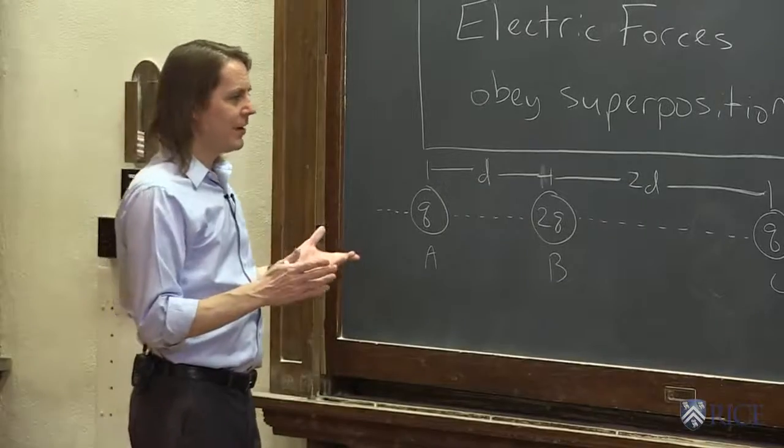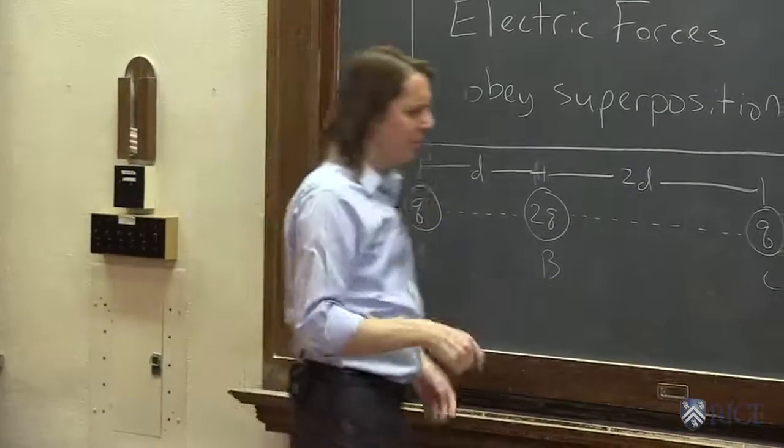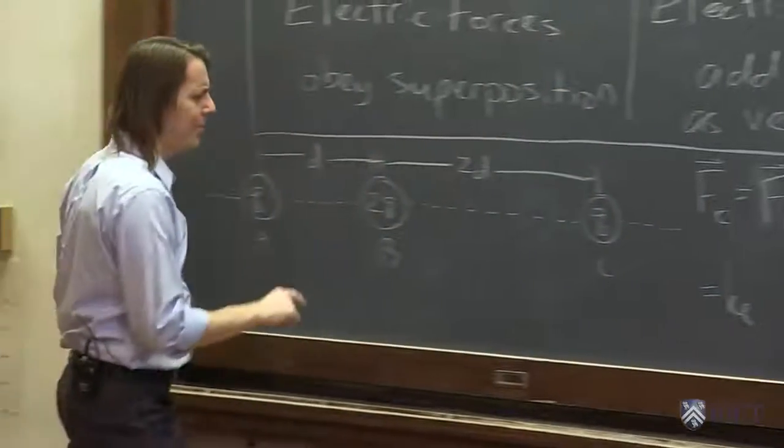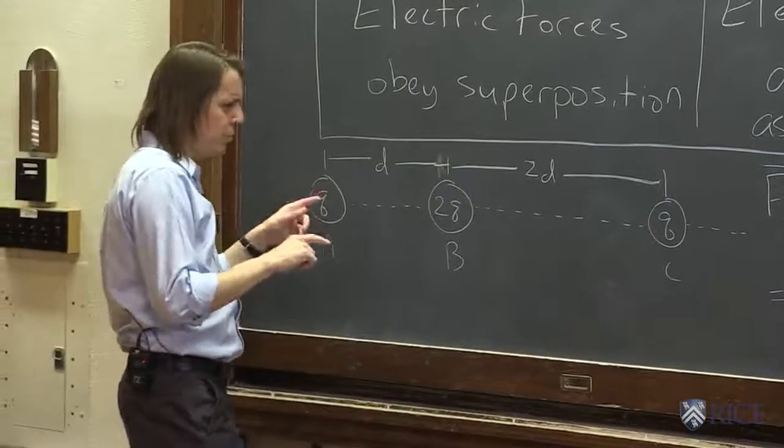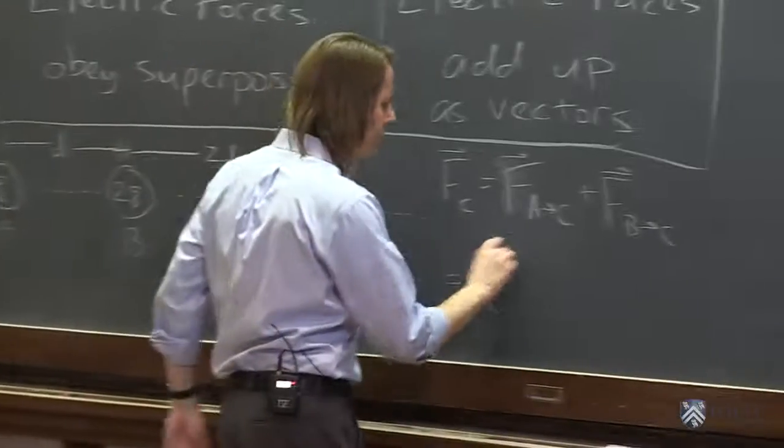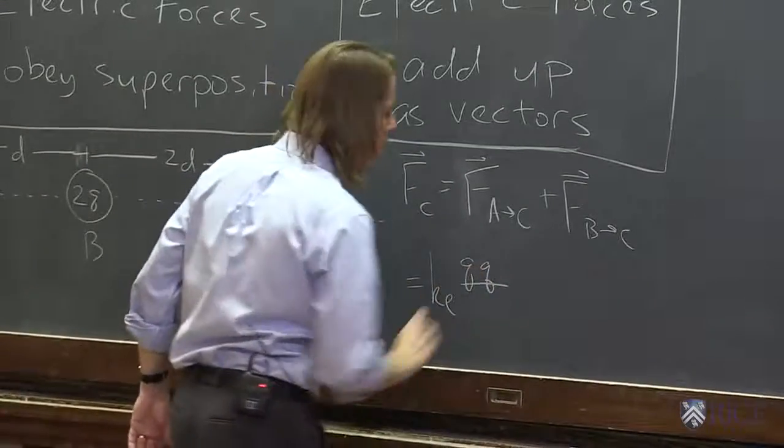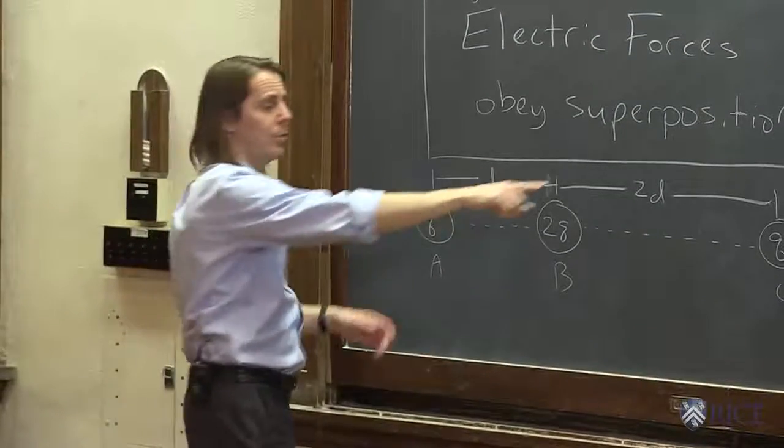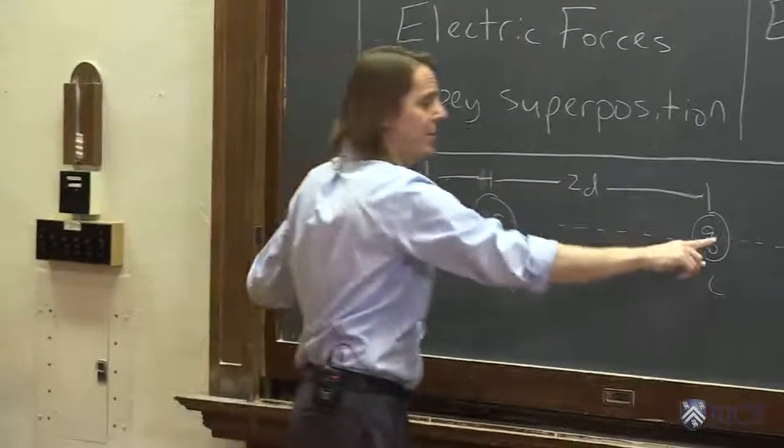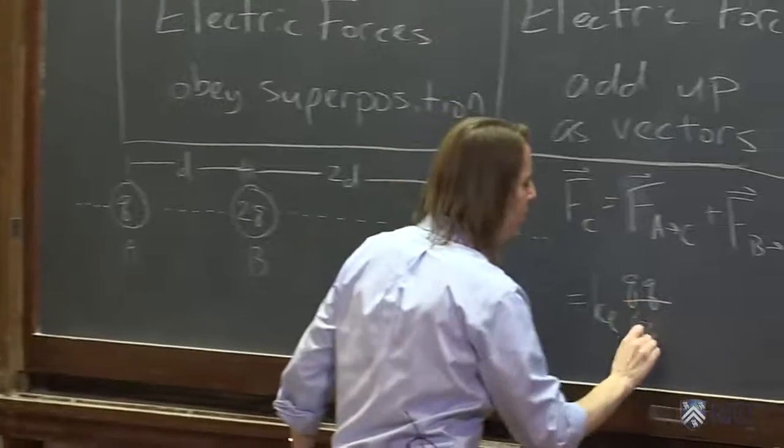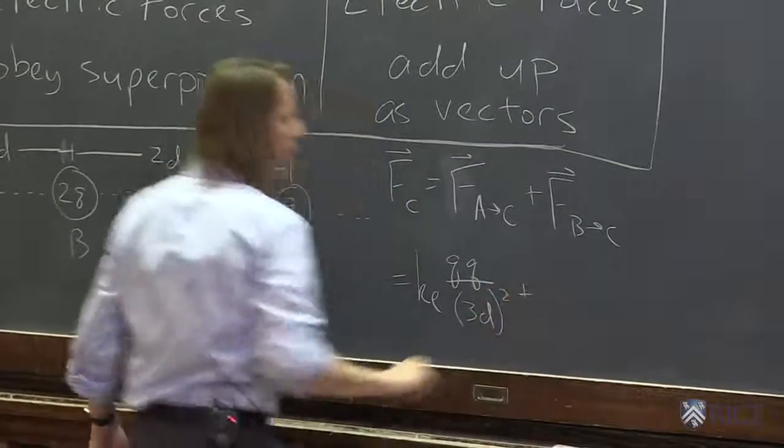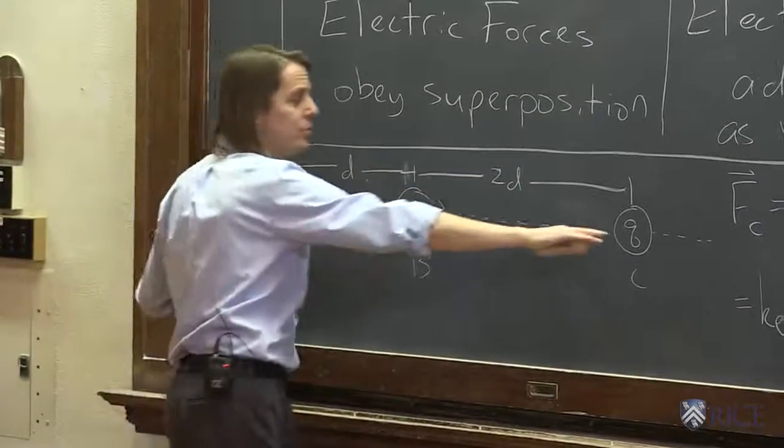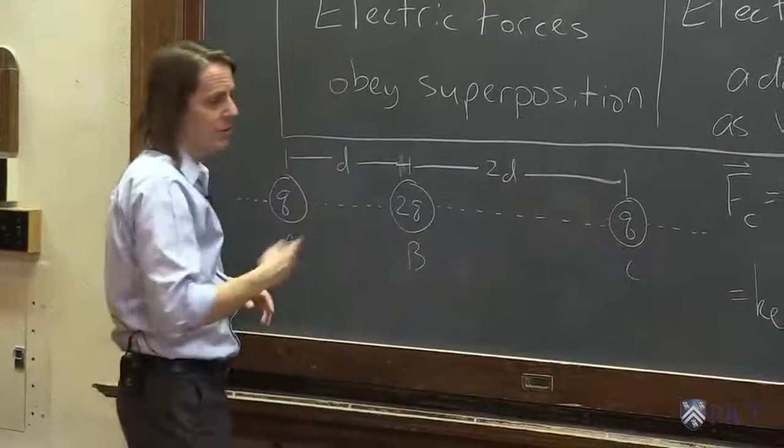So let's add these vectors. The force of A to C is Coulomb's constant times the product of the charges. So Q times Q over the separation squared. The separation is actually 3D squared, we're 2D plus another D, so 3D squared. And that is to the right, because they're both plus Q. We're assuming these are all positive charges. So that pushes to the right.